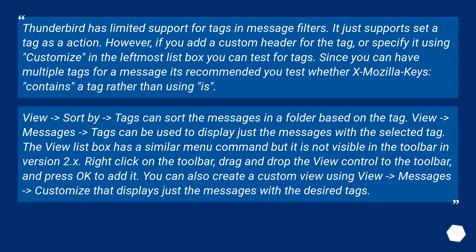Here's a link to the knowledge base on tags. Thunderbird has limited support for tags and message filters — it just supports 'set a tag' as an action. However, if you add a custom header for the tag, or specify it using 'customize' in the leftmost list box, you can test for tags. Since you can have multiple tags for a message, it's recommended you test whether x-Mozilla-Keys contains a tag rather than using 'is'.